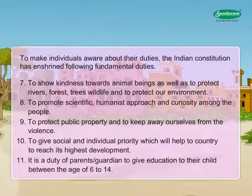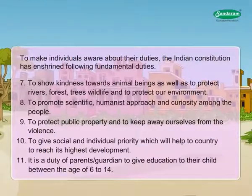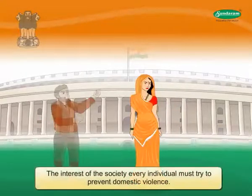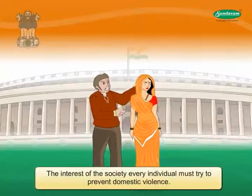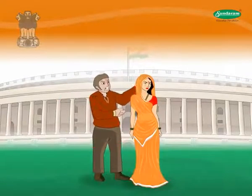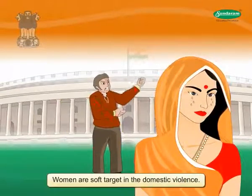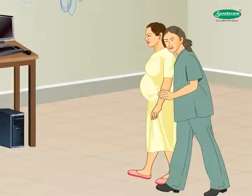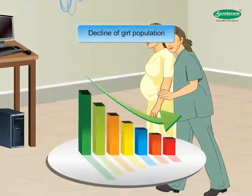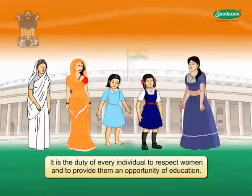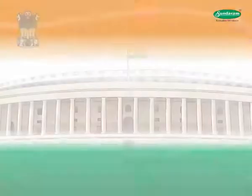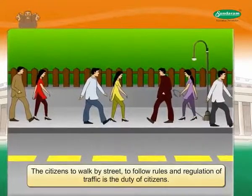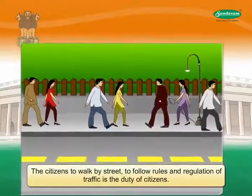11. It is a duty of parents or guardians to provide education to their child between the age of 6 to 14. For the interest of society, every individual must try to prevent domestic violence. It is found that women are often soft targets of domestic violence. Today, female feticide is prevalent in society, which has resulted in the decline of the girl population. It is the duty of every individual to respect women and to provide them an opportunity for education. Though it is the right of citizens to walk on the street, following the rules and regulations of traffic is the duty of citizens.